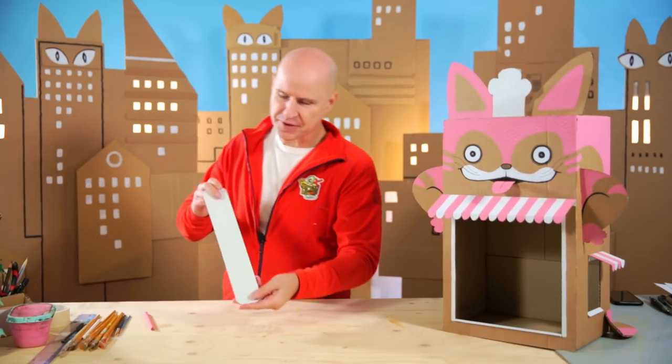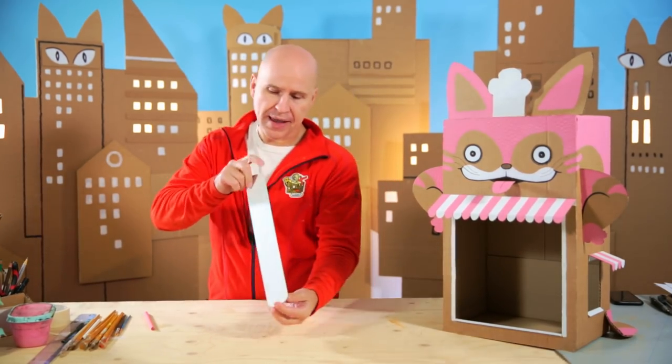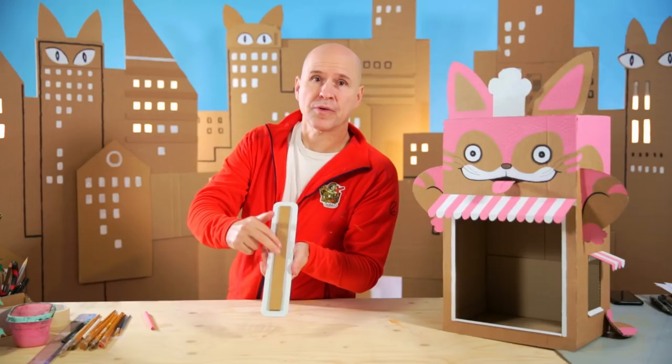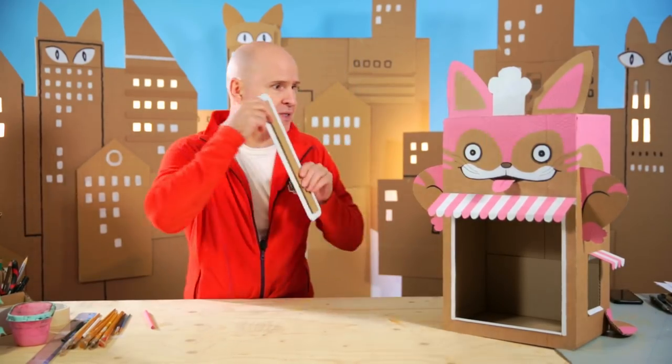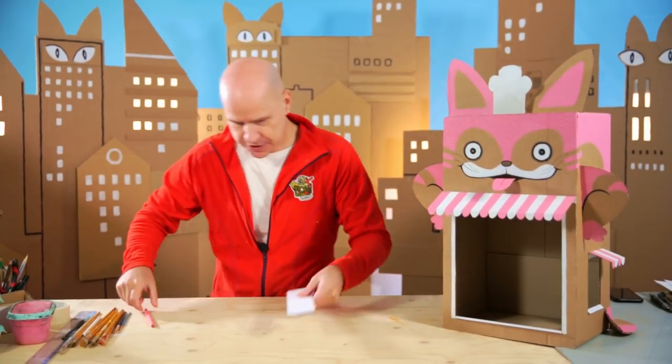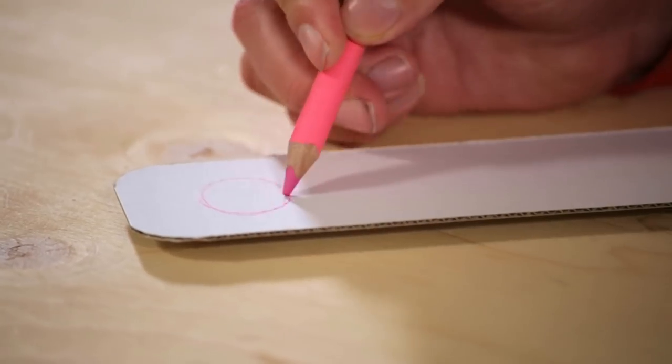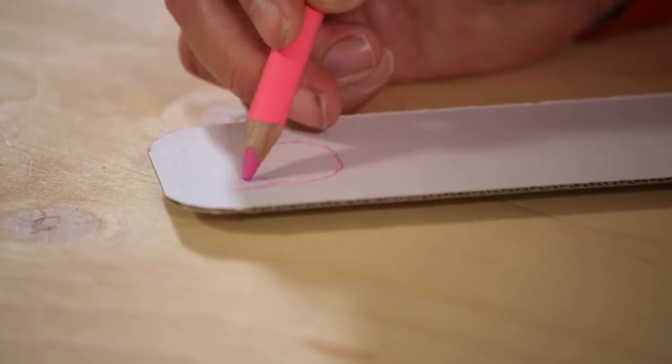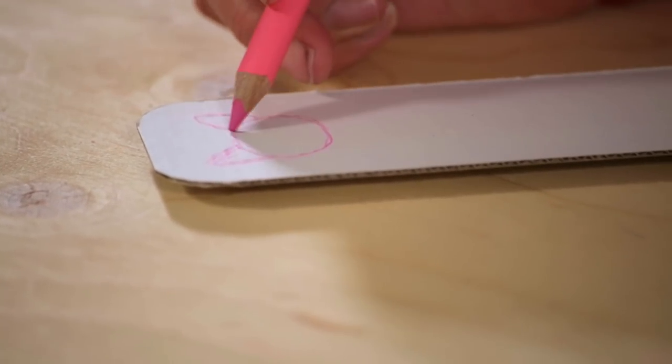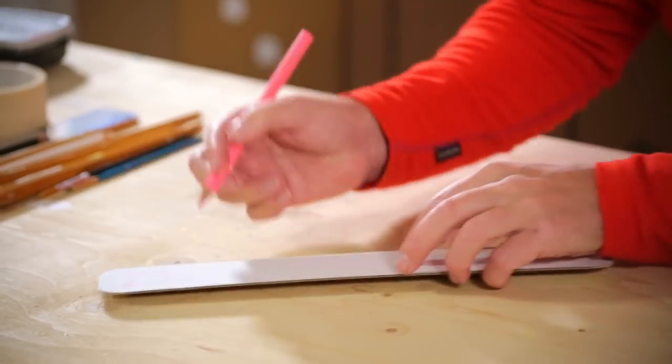Now every cafe needs a cafe sign. Luckily I've cut one out of cardboard right here. And on the back I've stuck a strip of brown cardboard to make it more 3D later when we stick it on the cafe. So I start with drawing the Cat Cafe logo on top: a little circle, two big ears. And that's it. Then I write Cat Cafe.